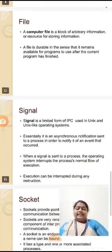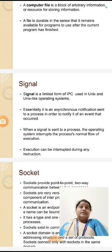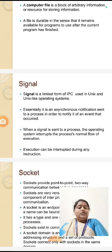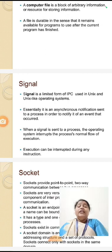A signal is a limited form of inter-process communication used in Unix operating systems and Unix-like operating systems such as Linux. Essentially, it is an asynchronous notification sent to a process in order to notify it of an event that occurred. When a signal is sent to a process, the operating system interrupts the process's normal flow of execution. Execution can be interrupted during any instruction. When a signal is passing from A to B, if it arrives correctly the signal is going properly; if it is interrupted, the signal flow is broken.